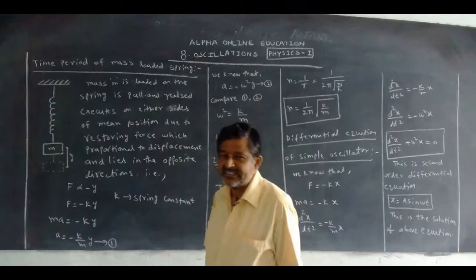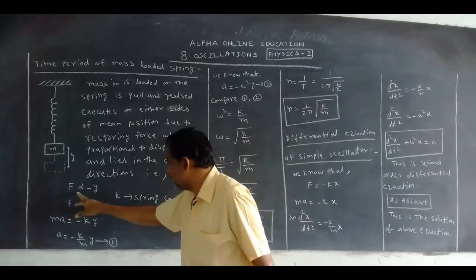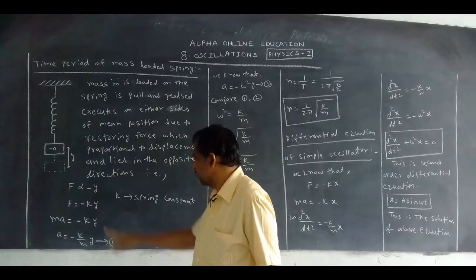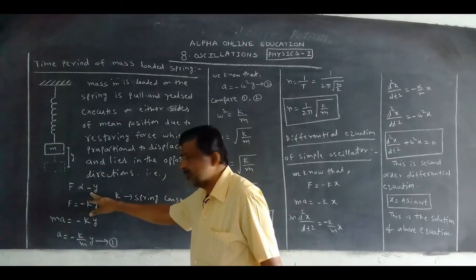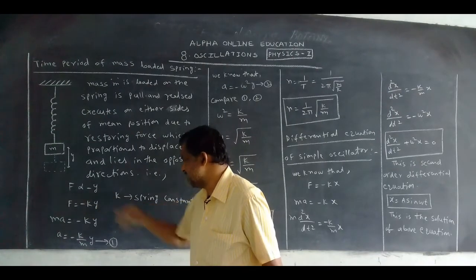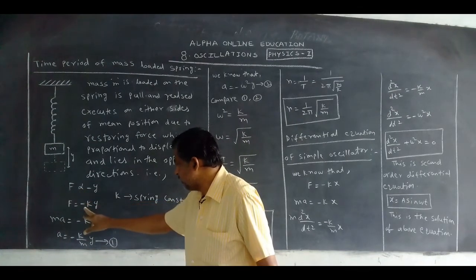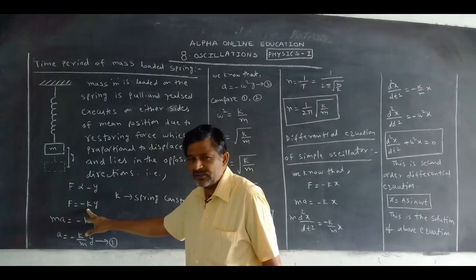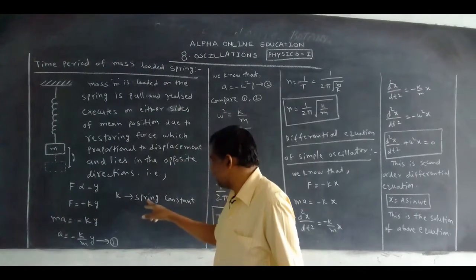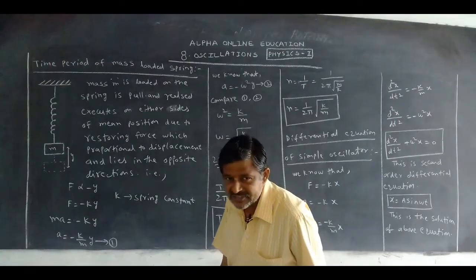How can we express that? F is proportional to displacement Y, so F is proportional to minus Y — the minus indicates the opposite direction. Removing the proportionality, we introduce a constant K, so F = -KY. This constant K is called the spring constant.